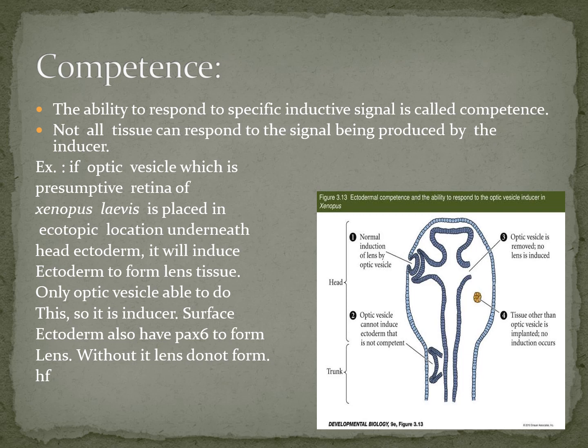In competence, some cells respond only to a specific signal — they cannot respond to every signal. Not all tissues can respond to the signal being produced by the inducer. Only cells with the appropriate competence will respond to a particular signal.